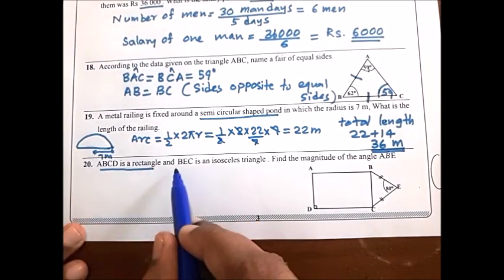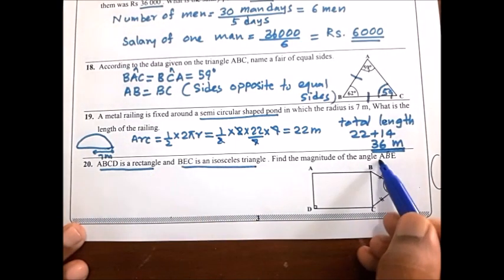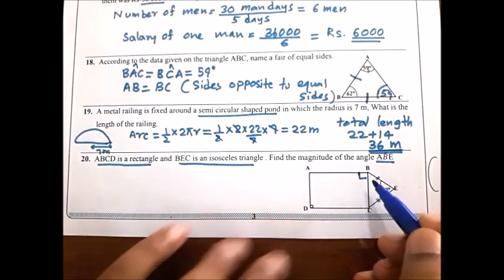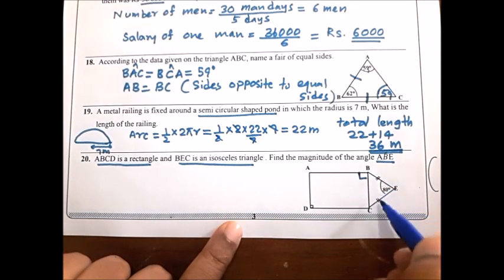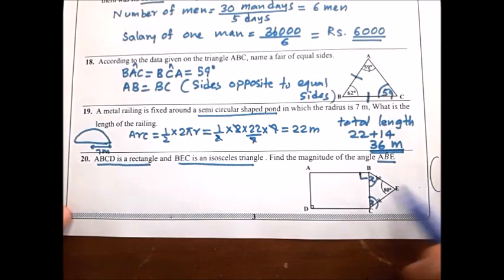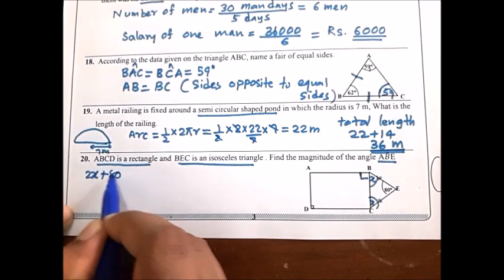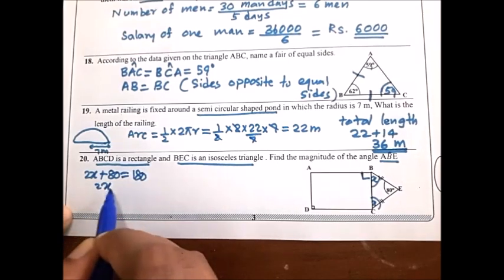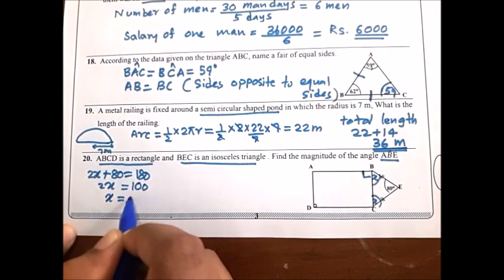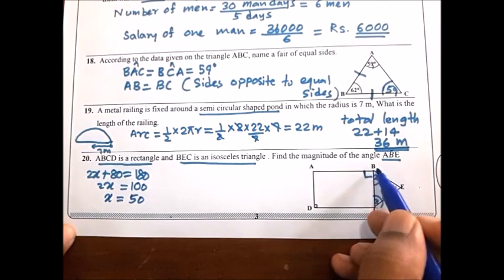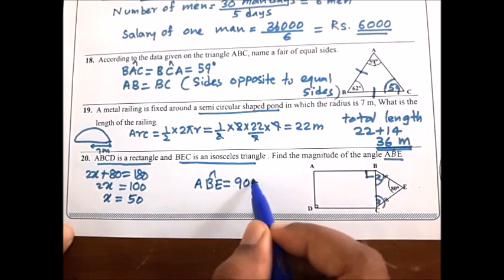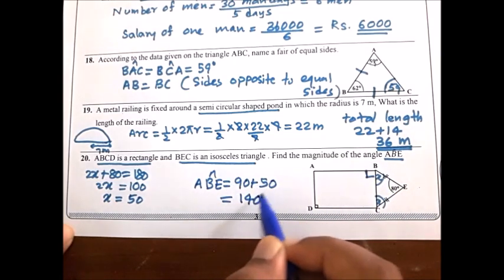For the 20th question, ABCD is a rectangle and triangle is isosceles. Find the magnitude of angle ABE. Since it is a rectangle, one angle is 90 degrees. If two sides are equal, opposite angles are also equal — take these as x. Sum of the three angles is 180: 2x plus 80 equals 180; subtract 80; 2x equals 90; divide by 2; x equals 50. Therefore angle ABE equals 90 plus 50, which is 140 degrees.